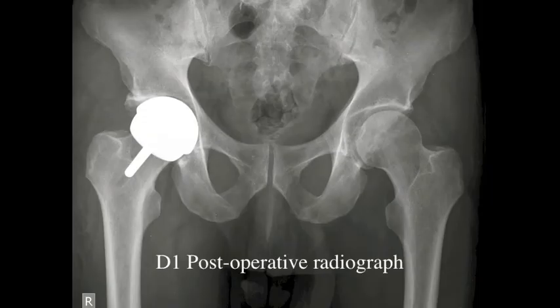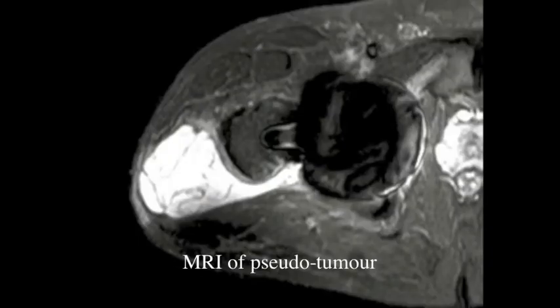This patient presents with persistent swelling about the hip after resurfacing arthroplasty. MRI demonstrates a fluid collection communicating with the joint, posterior to the greater trochanter.